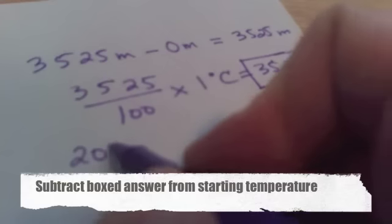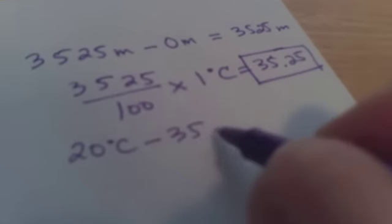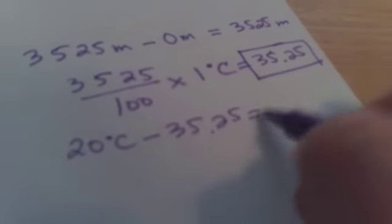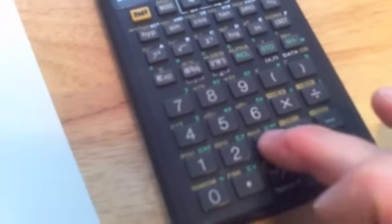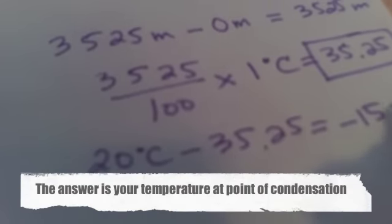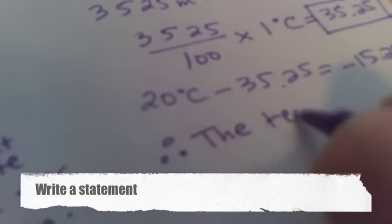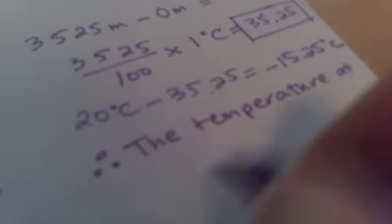Take your starting temperature and subtract from that total drop in temperature. The answer is in this case negative 15.25. This is the temperature at the point of condensation. Make sure you write a statement saying so.